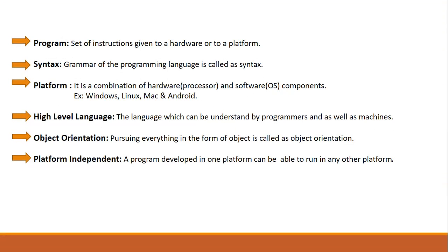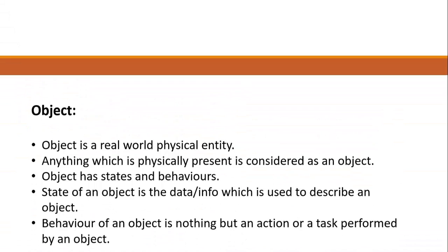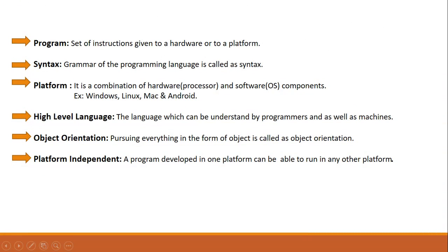First of all, we will discuss what is a program. A program is a set of instructions given to a hardware or to a platform. Now, what is a platform? It is a combination of hardware plus software. Hardware is nothing but your processor, and software is nothing but your operating system. These two combine and make a platform. Examples include Windows, Linux, Mac, and from Apple we have CarPlay which is used in automobiles. There are different platforms available in the market — for robots also we have some platforms.